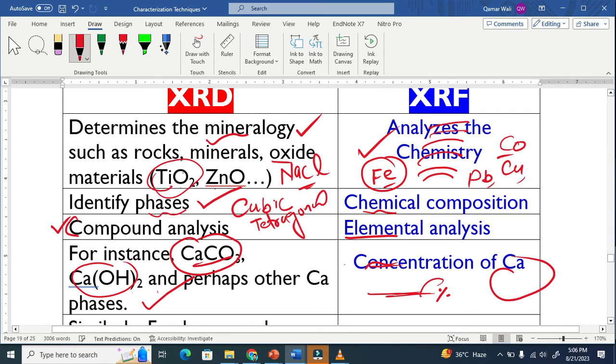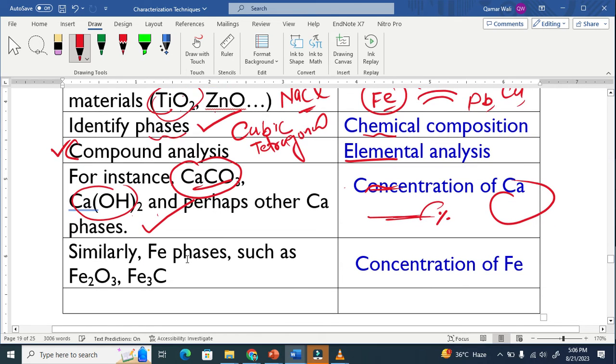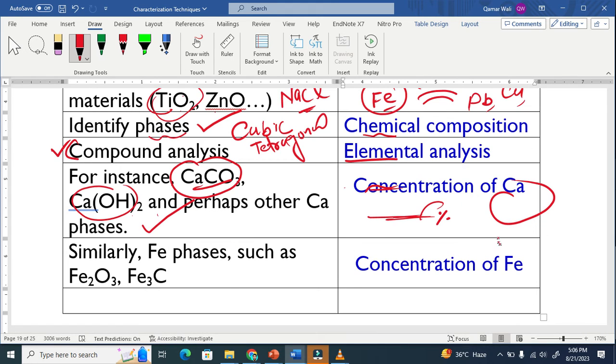What is the percentage of calcium in that sample? Similarly, iron phases like iron oxide, iron chloride. But XRF will only tell about the concentration of iron, while XRD will tell about the phases, the compounds.